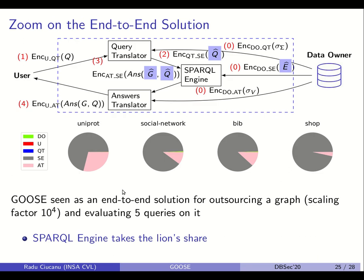We also zoomed on the time taken by each participant in GOOS. As expected, the lion's share is taken by the SPARQL engine — at least three quarters in each scenario. The second largest share is the answers translator, which grows when queries return more answers, meaning more answers to encrypt and decrypt. Desirably, the data owner and user shares are barely visible on these plots, which is expected since we want computation to be done in the cloud.